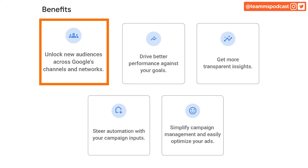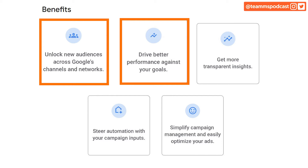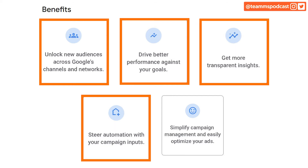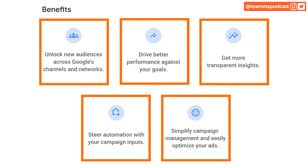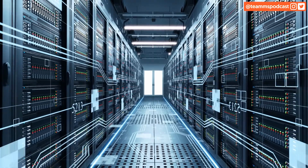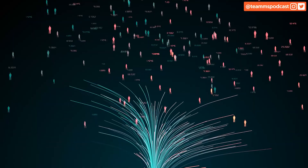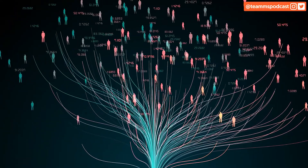So I want to read off some of these benefits and then talk about where we see things going. The benefits include: unlock new audiences across Google's channels and networks, drive better performance against your goals, get more transparent insights, steer automation with your campaign inputs, and simplify campaign management to easily optimize your ads. You can carry these benefits over to Google Shopping too. But at the end of the day, what this really means is Google's machines are going to get continually better at doing these things. Which is why I think just the art of optimizing paid ads is becoming more commoditized. You have to layer that in with other stuff — there's a creative aspect, and there's also creative thinking around other channels that can complement what you're doing with Google.